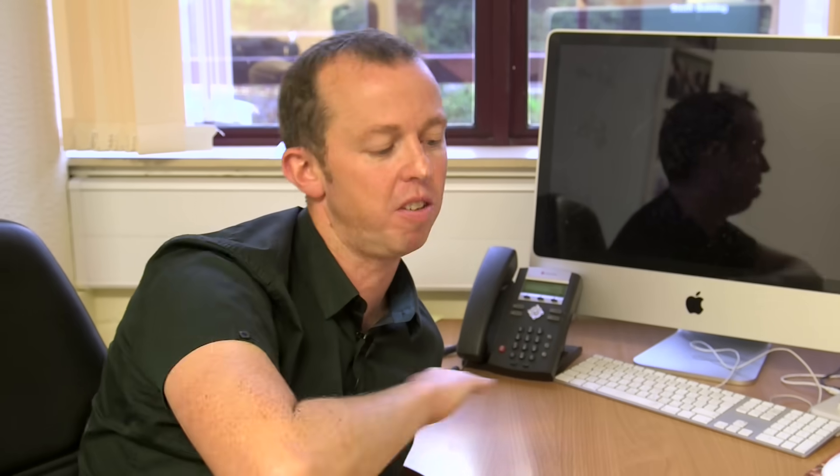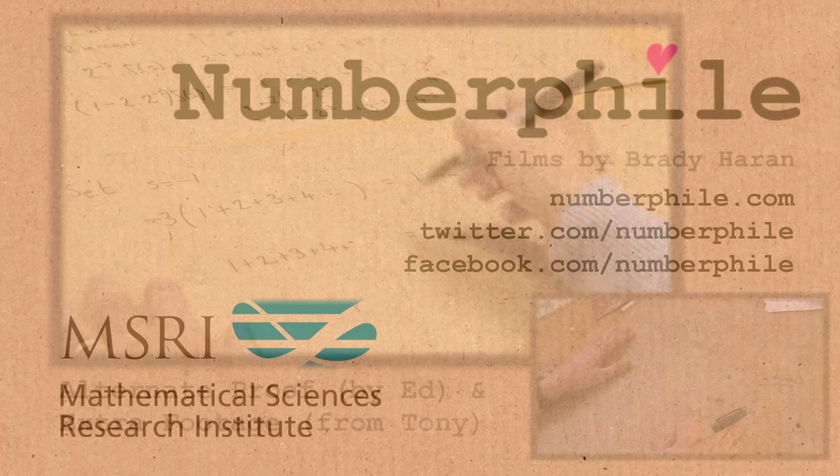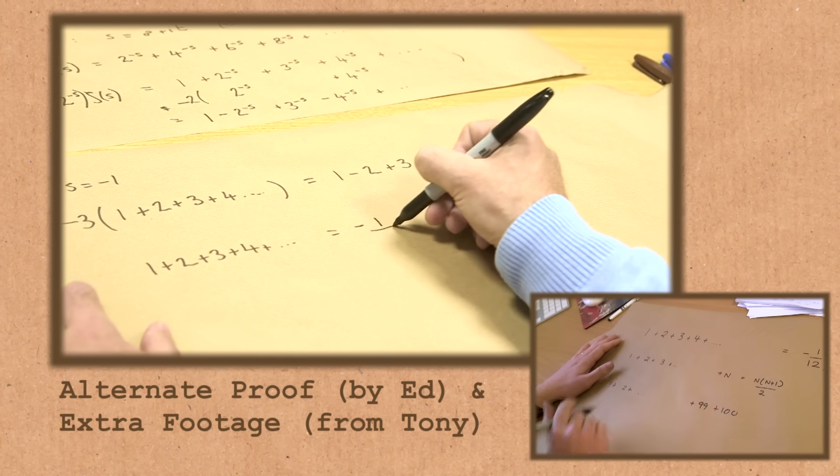But it is clearly counter-intuitive because intuitively you just want to stop the sequence and the minute you stop the sequence, then all your intuitions for this result goes out the window. So if I do 1 plus 2 plus 3 plus 4 plus 5 and I go up to a googolplex, you'll get a big number. Yeah, you won't get anything like minus a twelfth. You have to go to infinity, Brady. It's negative. I've added all these positive numbers together up to infinity and I've got minus a twelfth.